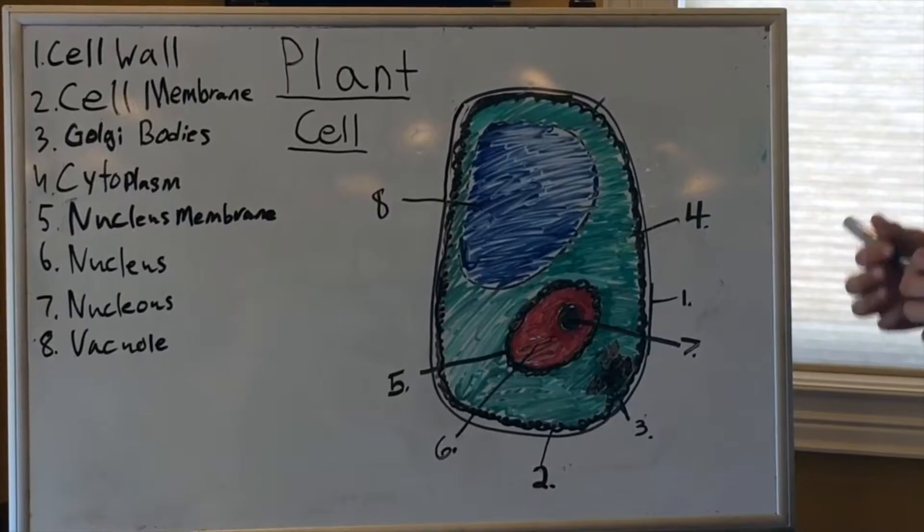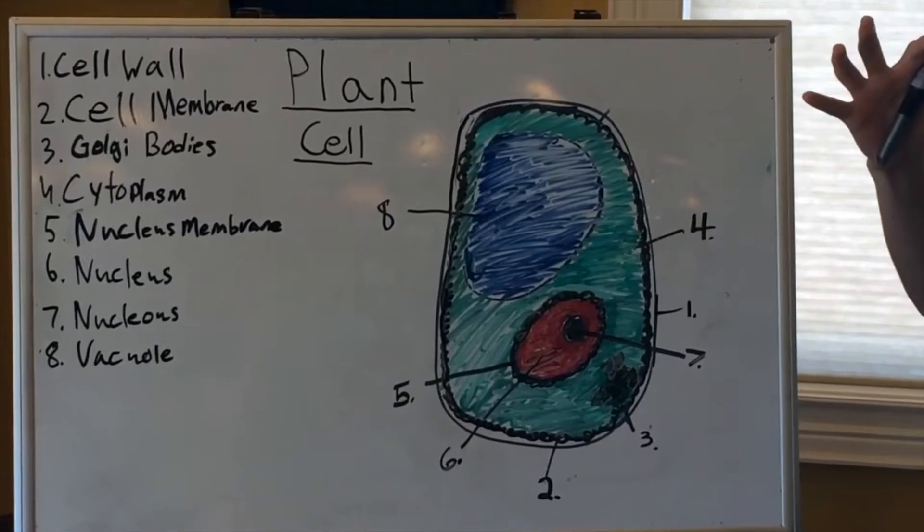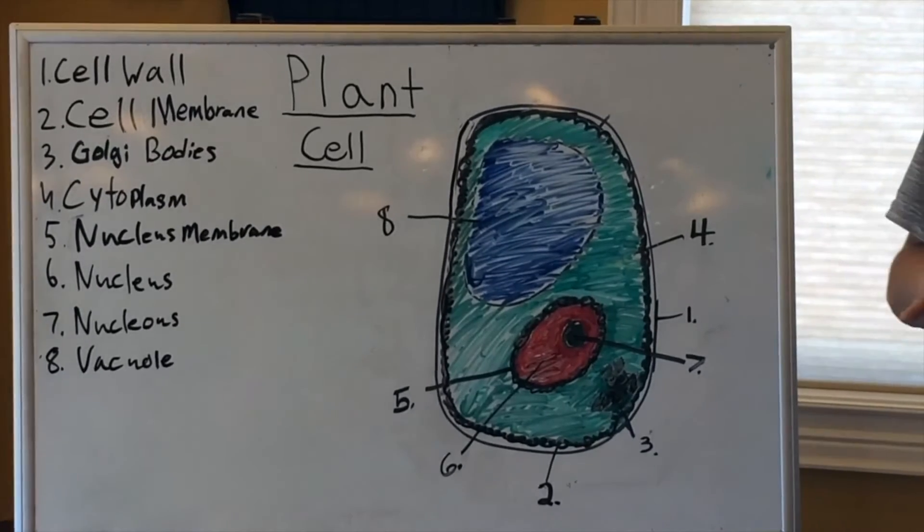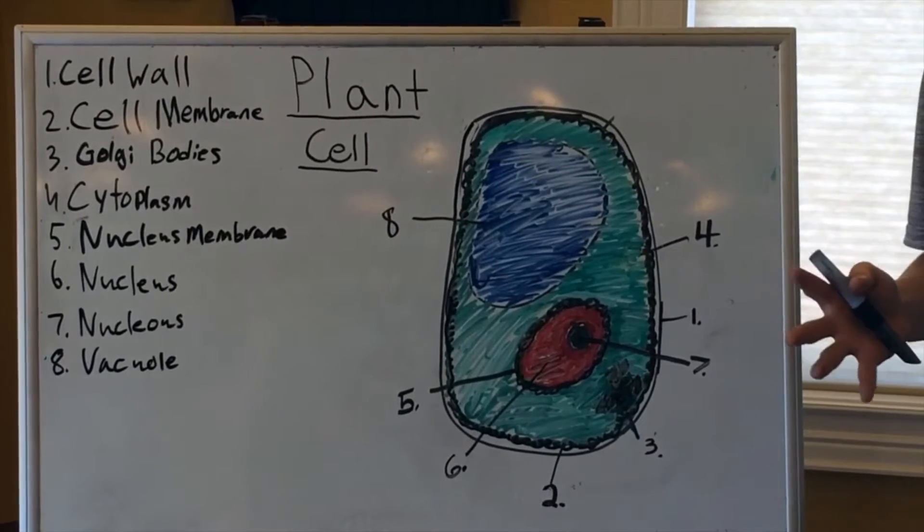The eighth part is the vacuole. The vacuole keeps the shape of the plant cell. It is full of fluids and also stores protein and carbohydrates.